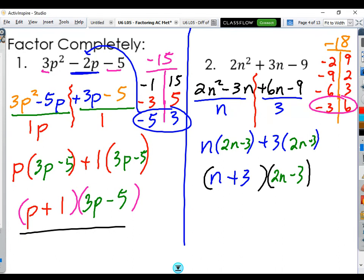All right. So you can see here on the right-hand side, I ended up with n plus 3 times 2n minus 3. And my steps are there, so you can see how I did the AC, and then I found my GCFs, divided them out, got that same binomial twice, and then brought them together.